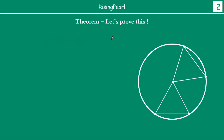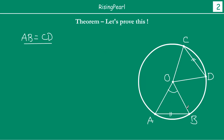Now that we understand the theorem clearly, let us go ahead and prove it. We have a circle with center O. We have drawn two chords — one is chord AB and the other is chord CD. Both chords are drawn such that their lengths AB and CD are actually equal, so we have AB is equal to CD. This is given. Now we have to prove that angle AOB is equal to angle COD, because angle subtended by chord AB at O is angle AOB, and angle subtended by chord CD at O is angle COD.